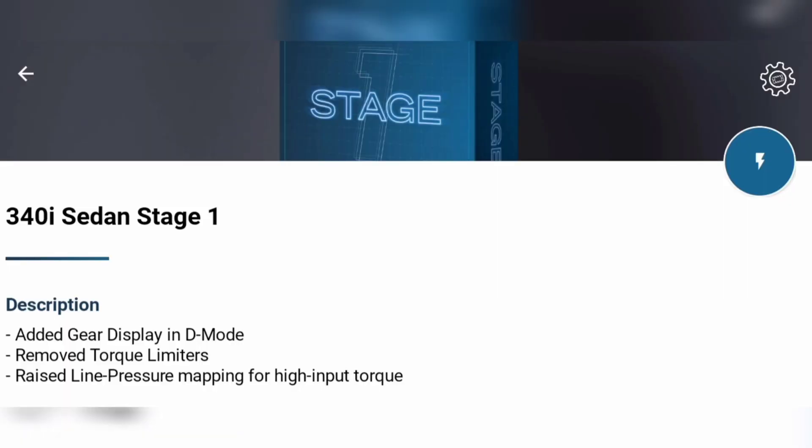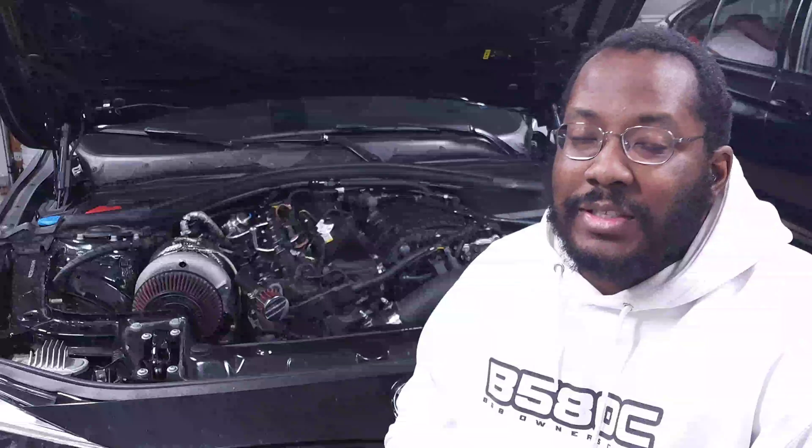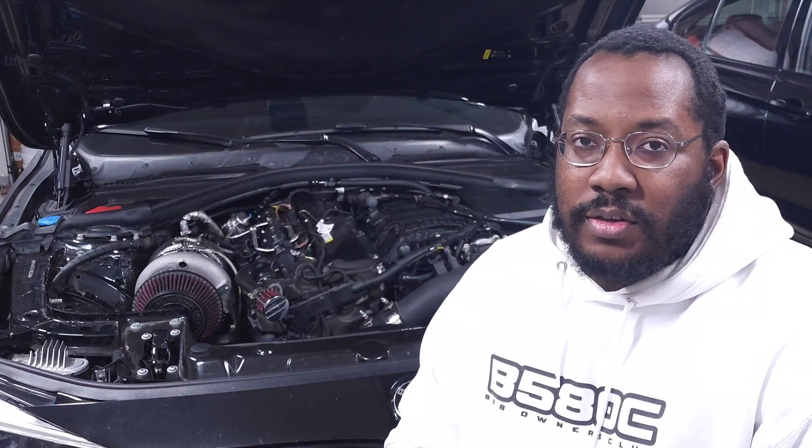Starting with Stage 1: if you haven't bought the license or you're wondering if you're missing out by running Stage 1, here's what it does. Stage 1 is a simple map that gives you everything you need to get the performance out of your car. The biggest feature I noticed is it adds the gear number indicator next to your drive mode even when you're in Drive. Normally it only shows your gear in Sport or Manual mode — now you get that indicator in Drive mode too, which is really convenient.